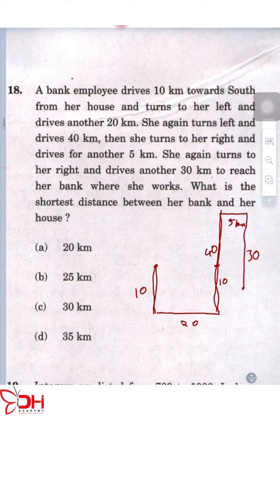So from here to here will be a straight line of 20 kilometers and from here to here it is 5 kilometers. So the right answer is 25, option B.